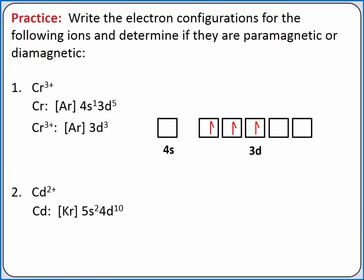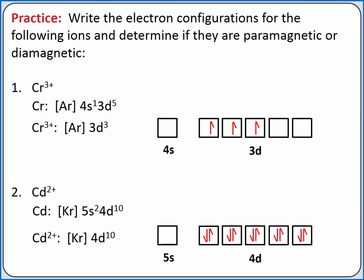To create the electron configuration for cadmium 2+, we'll remove two electrons. The 5s subshell has the highest principal quantum number, so we'll remove these two electrons first. Our electron configuration for cadmium 2+ is krypton 4d10. From the orbital diagram, we see all of our electrons are paired, so cadmium 2+ is diamagnetic.